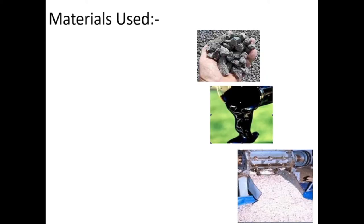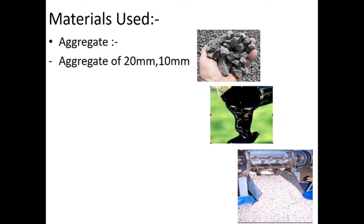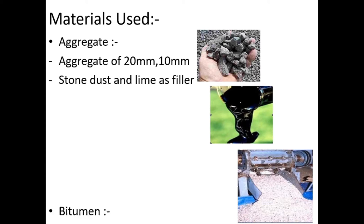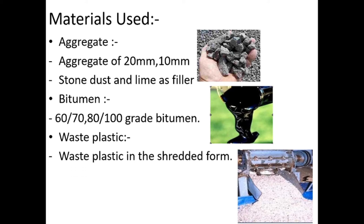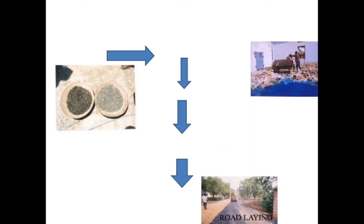Next, materials used. First, aggregate of 20 to 10 mm. Stone dust and lime as filler. Next, bitumen grade 60/70 and 80/100. The waste plastic material used is in shredded form; PVC is not used.